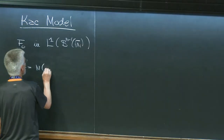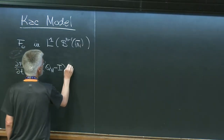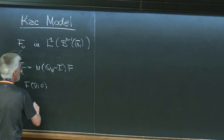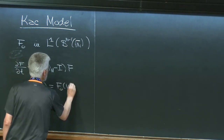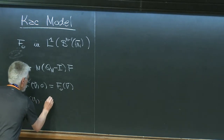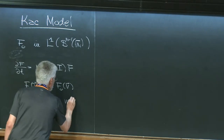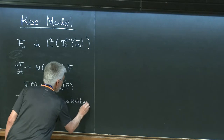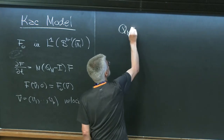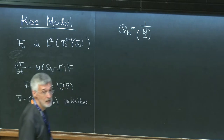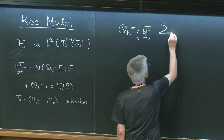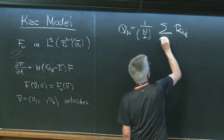The Kac evolution of the Master Equation is: dT F equals N times (Q_N minus the identity) F, with initial condition F(V, 0) = F0(V). I call V = (V1, ..., VN) — these are the velocities. Q_N was this operator here. Can you read my handwriting? Good. It's a sum of collision operators over all pairs.